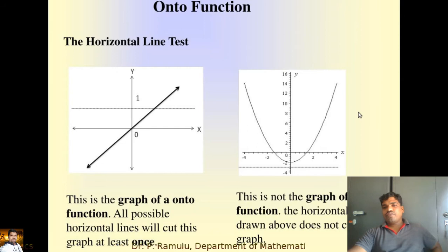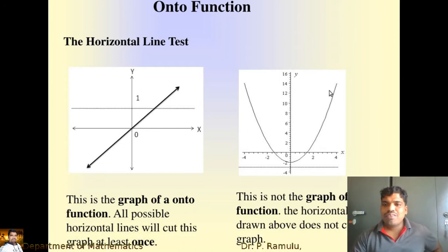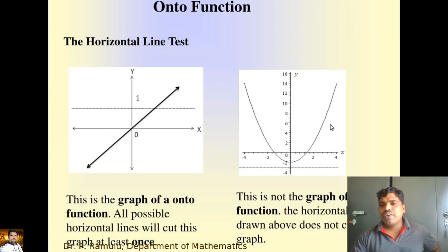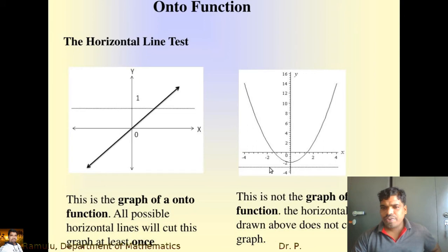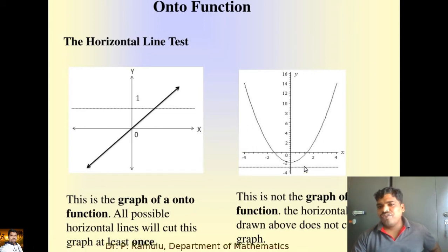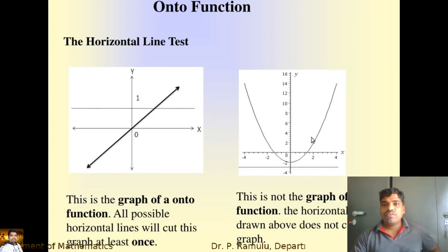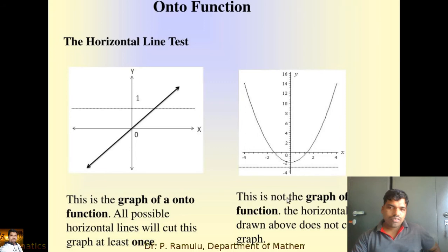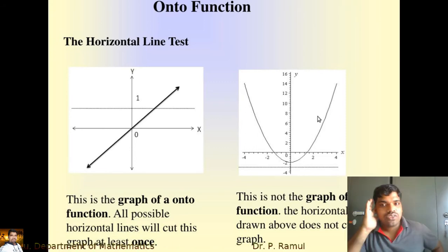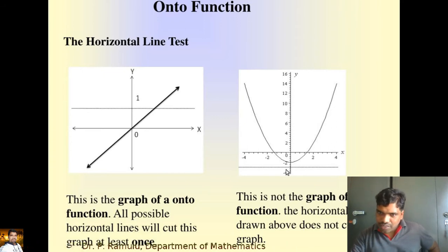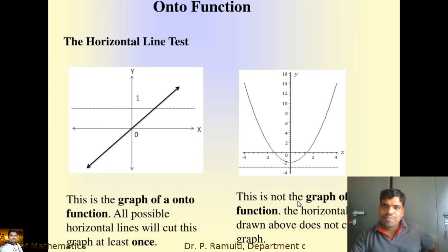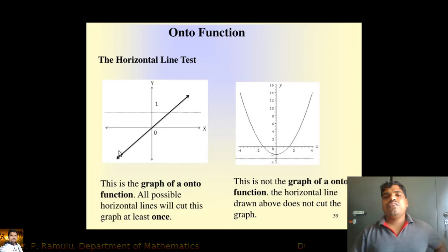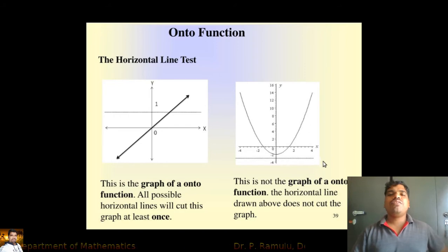The second graph is a parabolic graph. For some values, if I take a horizontal line parallel to the x-axis, it does not cut the graph — for example, below the vertex. That means those elements, like minus 4, do not have any pre-image. That is why this graph is not an onto function. In contrast, for the first graph, any line parallel to the x-axis cuts the graph, so it is onto.